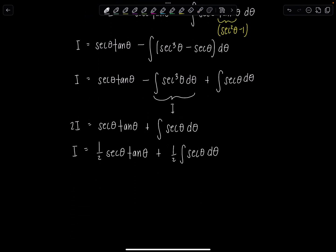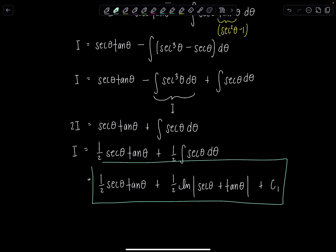So you can put it all together later if you want. Let's just knock it out here. So this is one half secant theta, tan theta, plus one half, antiderivative of secant theta, just memorize it. Natural log, absolute value, secant theta, plus tan theta, plus, I'll put c1, because this is from our first integral. Remember, I broke it up into 2.